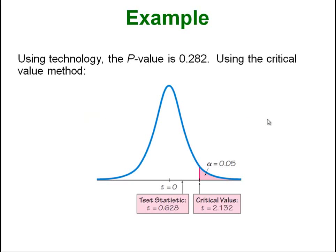We can look that up in a table or use technology to get a p-value of 0.282, which is pretty large. Whether we want to use the critical value method or the p-value method, the critical value method using our degrees of freedom we get a critical value of 2.132 and our test statistic was down here at 0.628. In both cases we can see that we fail to reject.